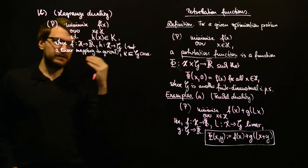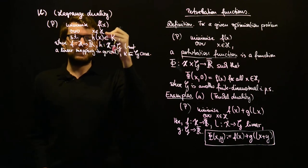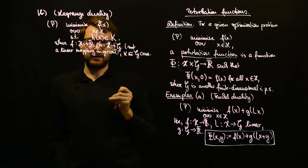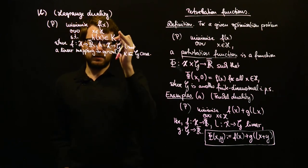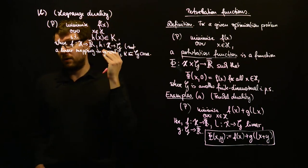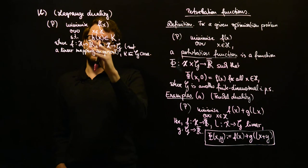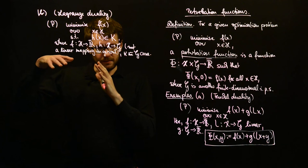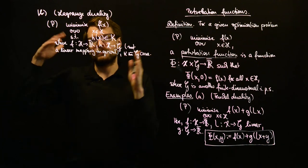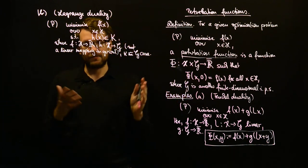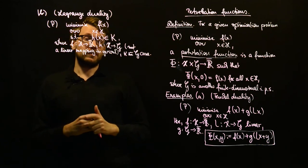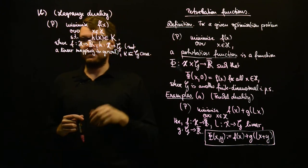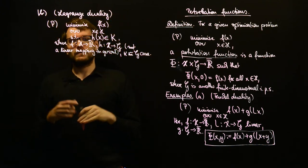So, this gives you a constraint optimization problem and the most popular choice for K would be, for example, the cone of non-positive numbers. So, h of x then should be in the, like, non-positive numbers, but the vectors with non-positive entries in R^n. So, then h of x would be component-wise less or equal to zero. So, this will give you inequality constraints.